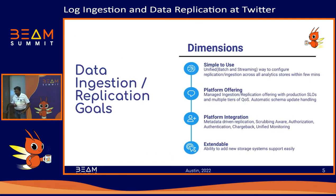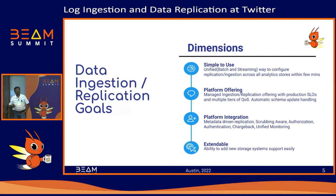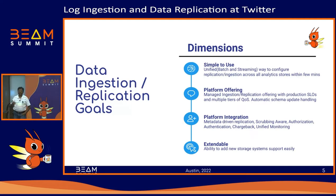With those challenges, we listed down how we should change our replication and migration architecture. First and foremost, data should be available in the required destinations in a very simple way for data engineers. They should be able to go to a UI, GUI, or CLI and specify: here is my data — for example, unhydrated tweets — and I want it available in HDFS, GCS, and BigQuery. They should configure the replication topology, and we bring up pipelines in the background providing data delivery with certain SLAs.